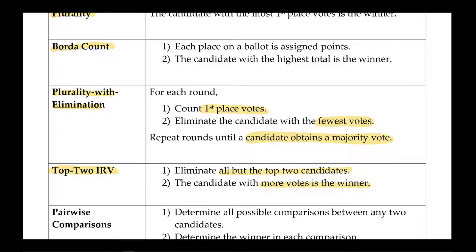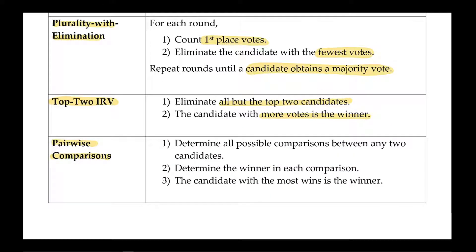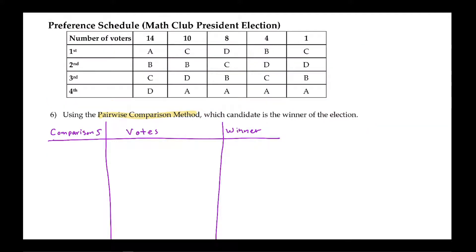So with the pairwise comparison method, here are the steps. We determine all possible comparisons between any two candidates, and then we're going to determine the winner for each of the comparisons, and then the candidate with the most head-to-head wins is the winner. So let's use the pairwise comparison method to determine the winner for the math club president election.